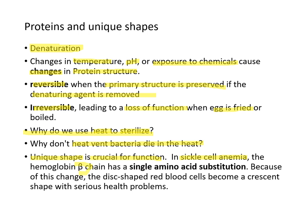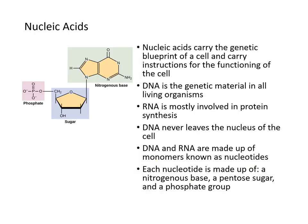The unique shape of a protein is crucial for its function. In sickle cell anemia, the hemoglobin beta chain has one single amino acid substitution, and because of that change, a typically disc-shaped red blood cell turns into a crescent shape, causing serious health problems.